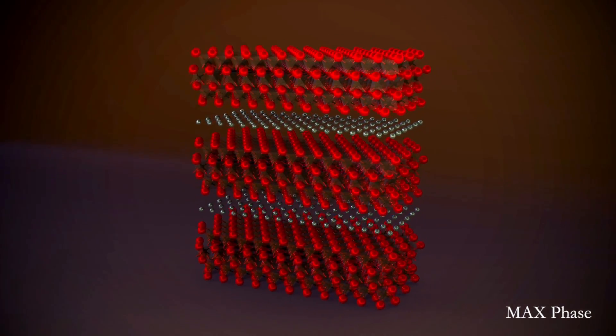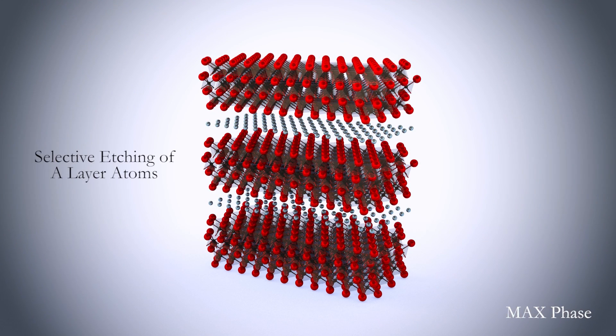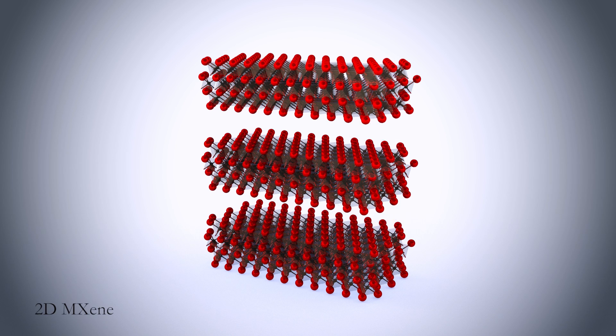MXenes are two-dimensional layered transition metal carbides and nitrides that are produced by selective etching of MAX phases.